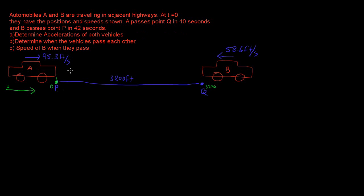We know that A is moving to the right, and in 40 seconds it will get to point Q. B is moving to the left, and in 42 seconds it will get to point P. From this information, we can determine the acceleration of both of these cars.